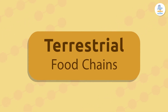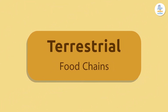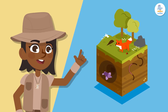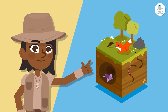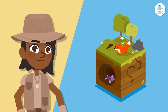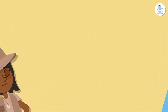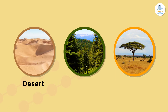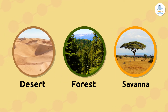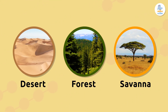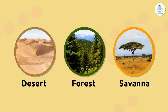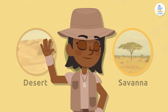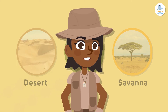Terrestrial food chains! Terrestrial food chains exist both on land and below the surface of the earth. For example, we find terrestrial food chains in the desert, forest, and savannah. Can you think of any other terrestrial habitats? Come with me — we're going to look at an example.